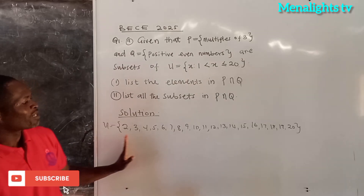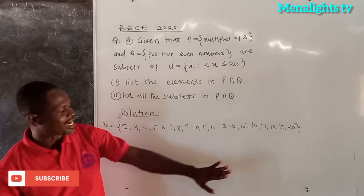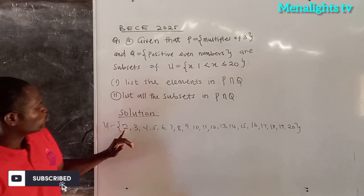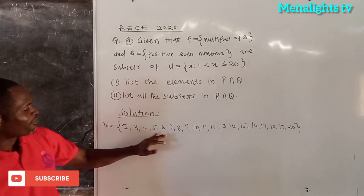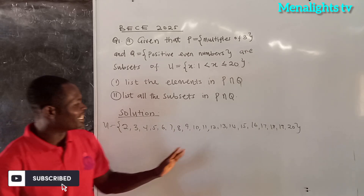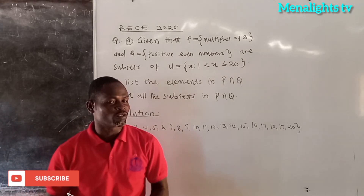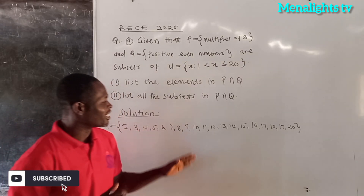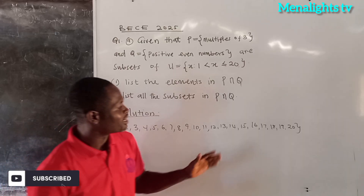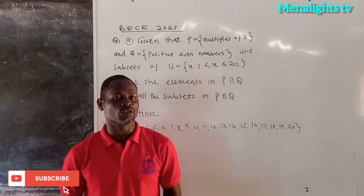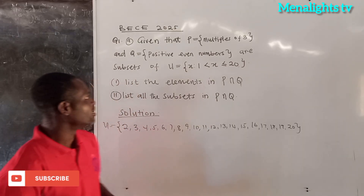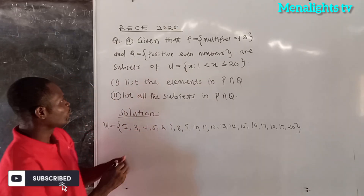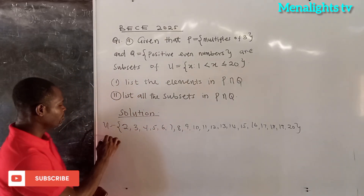So the members of the universal set are: 2, 3, 4, 5, 6, 7, 8, 9, 10, 11, 12, 13, 14, 15, 16, 17, up to 20. Now we come to P.